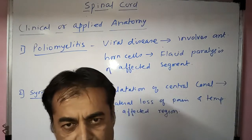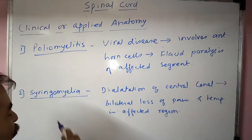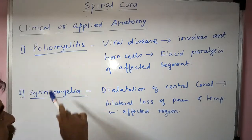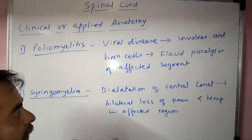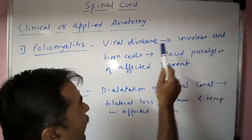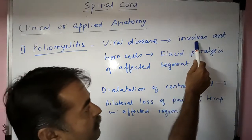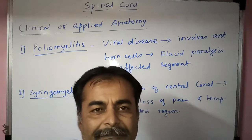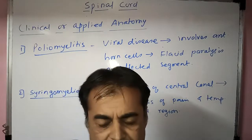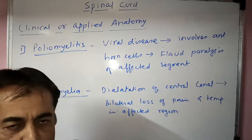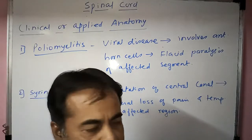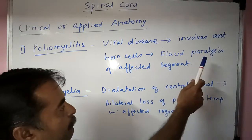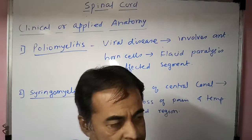Now for the applied anatomy. First, poliomyelitis — it is a viral disease which involves the anterior horn cells and causes flaccid paralysis of the affected segment of the body.